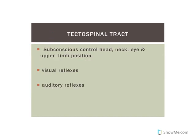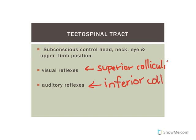The tectospinal tract originates within the midbrain, specifically within the corpora quadrigemina, which has four colliculi. The superior colliculi are involved in visual reflexes, and the inferior colliculi are involved in auditory reflexes. So this tract controls your eyes, neck, head, and upper limbs in response to visual and auditory reflexes. For example, a very loud noise causes you to jump or turn your head — this tract is involved in that response.